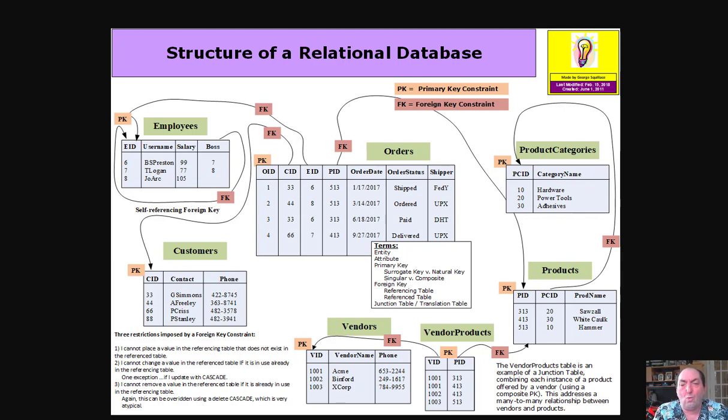This would represent a non-existing customer and would violate referential integrity rules if that were permitted in the database. So the foreign key constraint will not allow a value in the referencing table, orders, if it doesn't already exist in the referenced table, customers. But that's only one of the restrictions.